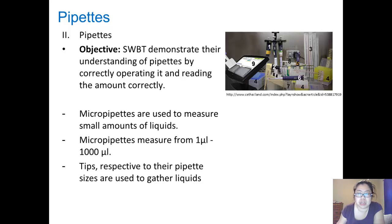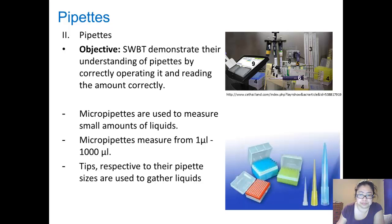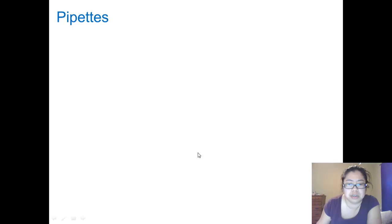And here is a myriad of equipment that can be used. And here are examples of the three different kinds of pipettes: a 20 microliter pipette, a 200 microliter pipette, and a 1,000 microliter pipette.